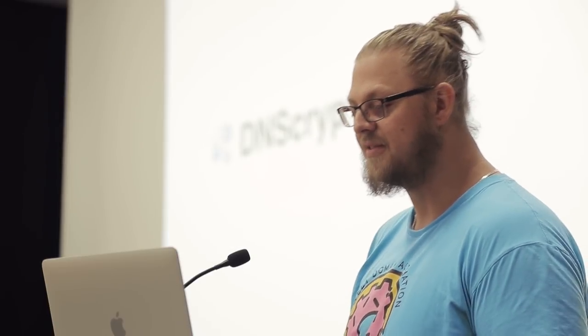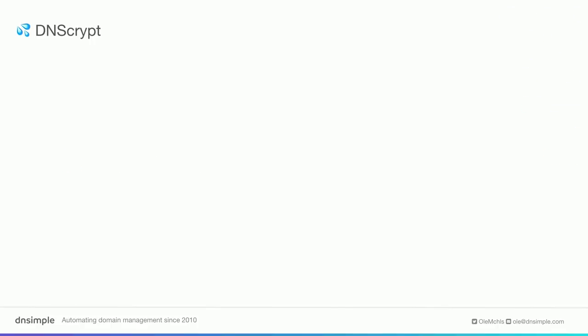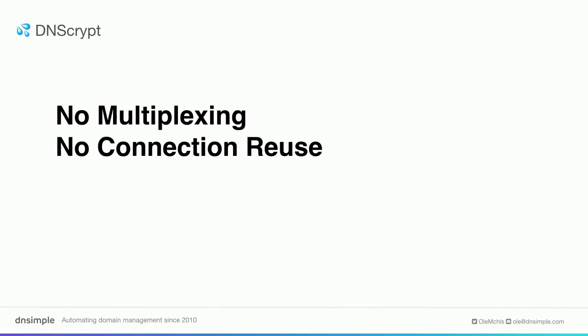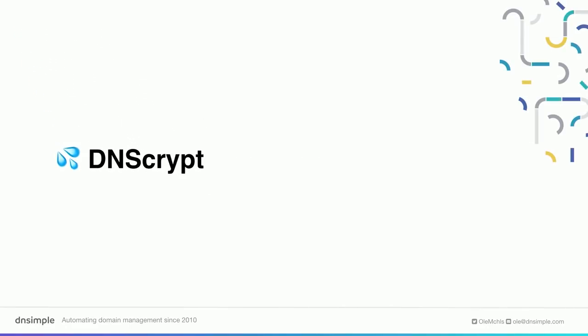There have been attempts to fix that. There's DNSCrypt, which is one of my favorites because they're so funny — they don't support multiplexing, they don't reuse connections, and they use TCP, so every domain you want to resolve requires opening a new TCP connection with all the back and forth. That alone is pretty bad. But they're not an IETF project, so they don't have an RFC, and I would not consider this a standard at all. So let's forget about DNSCrypt — this is not our solution.